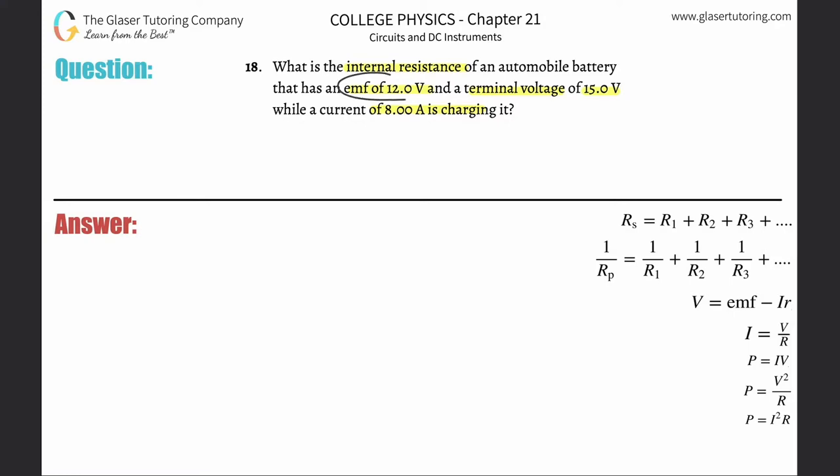This sounds a little backwards because we're talking about the EMF as the theoretical max, and now the terminal voltage is greater than the EMF. The only reason why that is, is because we're talking about charging a battery. We are not talking about a battery releasing its energy, we're talking about putting energy into the battery.